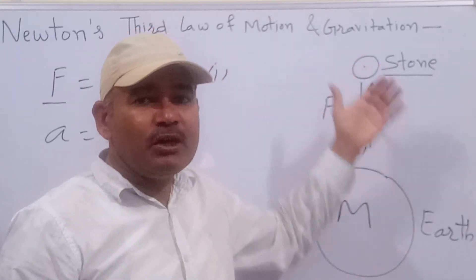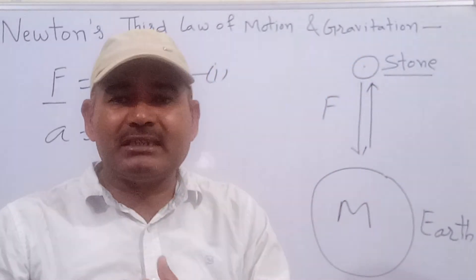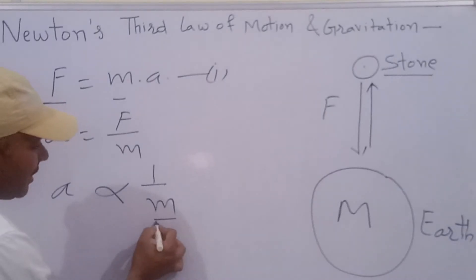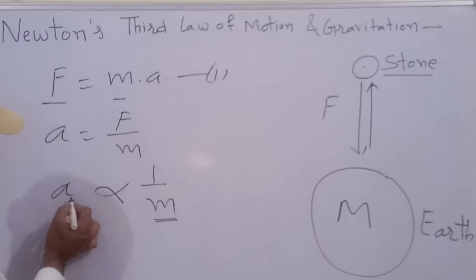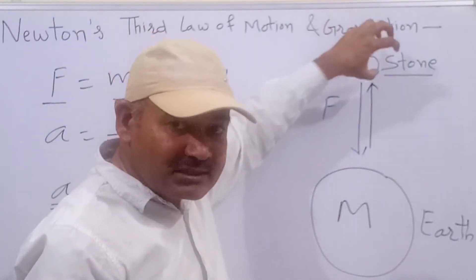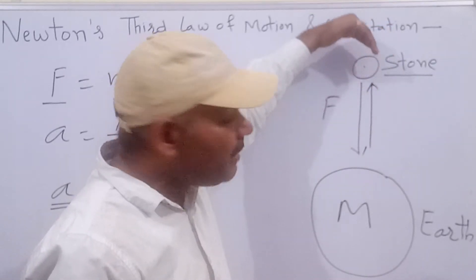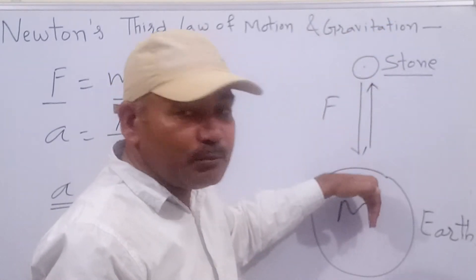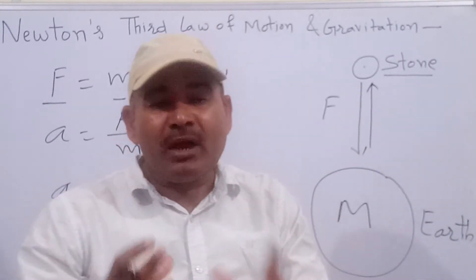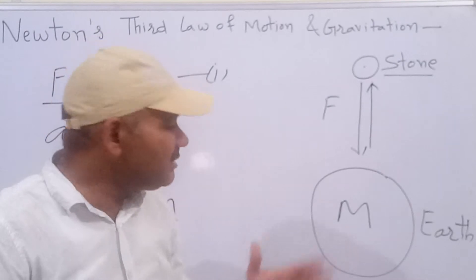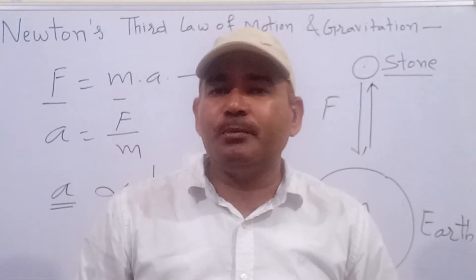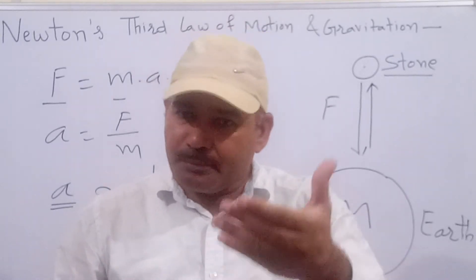जबकि इस object का Earth के mass के comparison में mass बहुत कम है, negligible है। क्योंकि stone का mass कम है, इसलिए acceleration बहुत ज्यादा होगा। तो stone Earth की तरफ move कर जाएगी, Earth stone की तरफ move नहीं करेगी क्योंकि Earth का mass बहुत ज्यादा है इसलिए acceleration बहुत कम होगा। तो ये था Newton's third law of motion and gravitation।